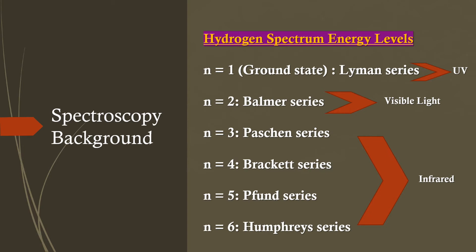The first energy level, the ground state, is the Lyman series and it falls in the ultraviolet area. The Balmer series falls in the visible light area, and the Paschen, Brackett, Pfund, and Humphreys series fall in the infrared area.